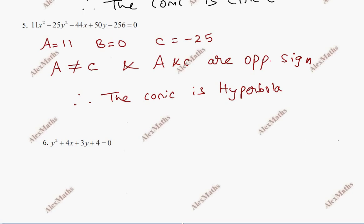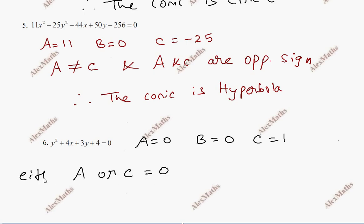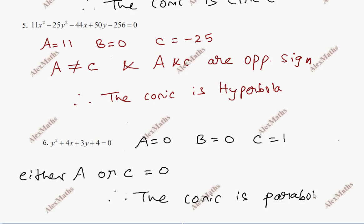Question number 6: there is no X² term, so A value is 0. There is no XY term so B value is 0. C is the Y² coefficient which is 1. Either A or C is equal to 0. This condition means the conic is therefore parabola.